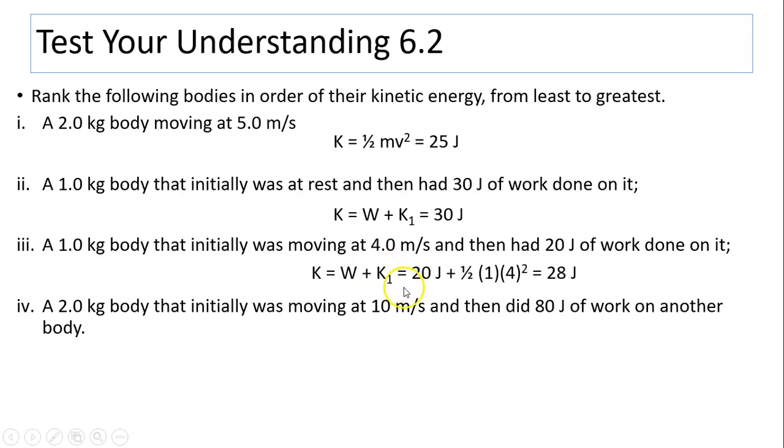Again, K equals W plus K1. Initially, it has 20 joules of work done on it plus one half mv squared. You have 28 joules. Last one, K equals W plus K1. But W in this case is negative because you did work on other objects. You lost energy. You lost 80 joules plus its energy. So you have 20 joules.